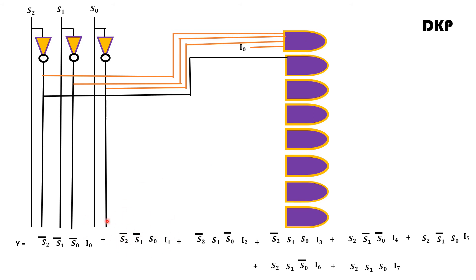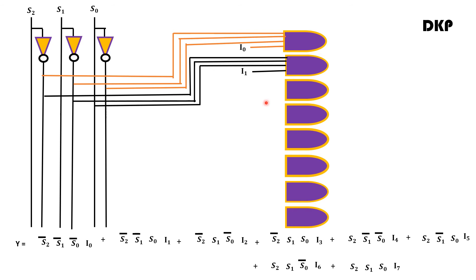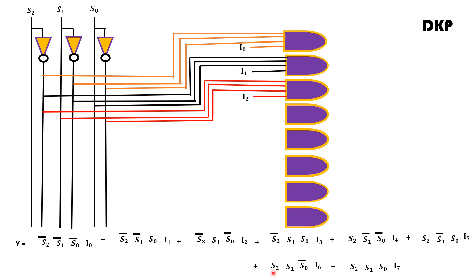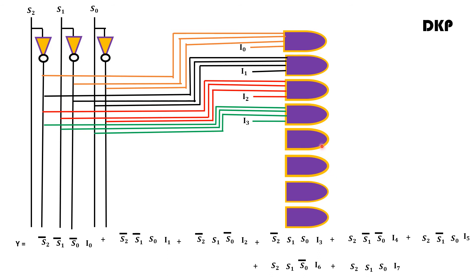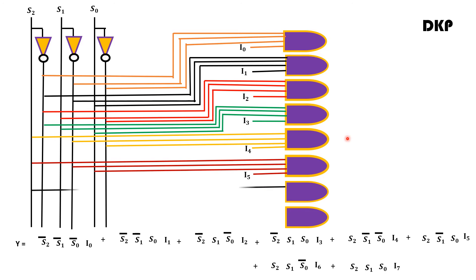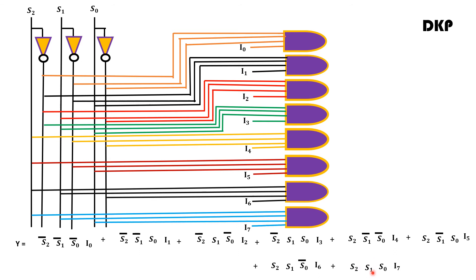The inputs to the second AND gate are S2 bar, S1 bar, S0, and I1. To the third AND gate: S2 bar, S1, S0 bar, and I2. To the fourth AND gate: S2 bar, S1, S0, and I3. Similarly, you connect inputs to the fifth, sixth, and seventh AND gates, and the inputs to the eighth AND gate are S2, S1, S0, and I7.